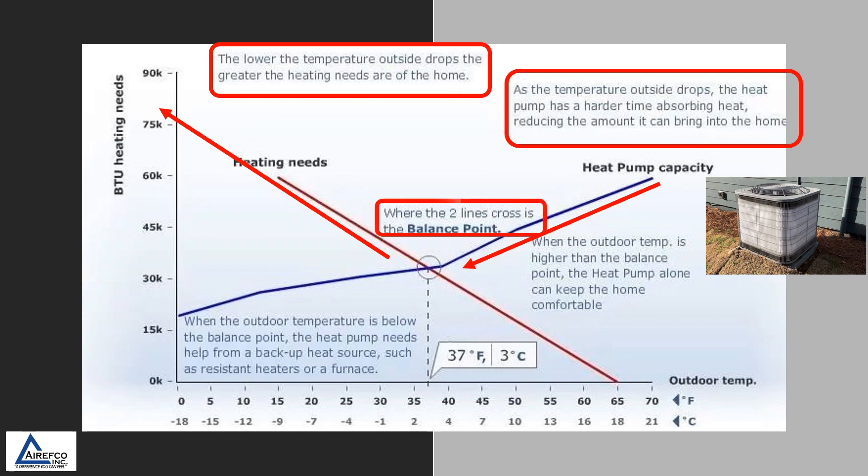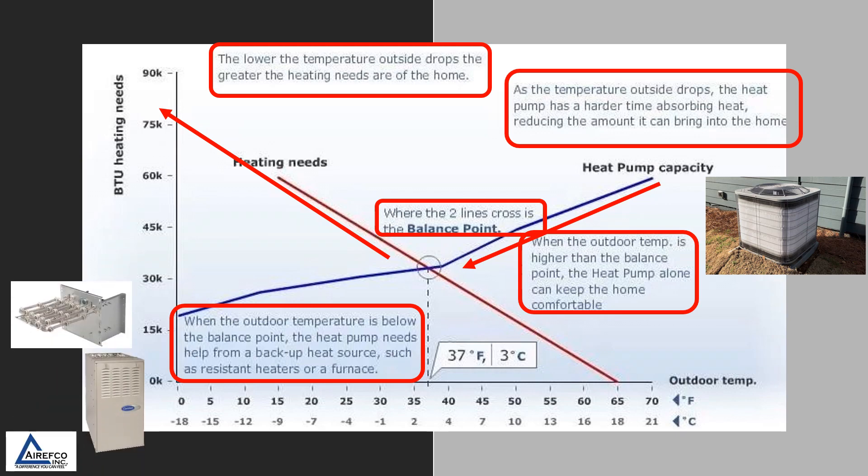Where the two lines cross is the thermal balance point. When the outdoor temperature is higher than the balance point, the heat pump alone can keep the home comfortable. When the outdoor temperature is below the balance point, the heat pump needs help from backup heat sources such as resistant heaters or a furnace.